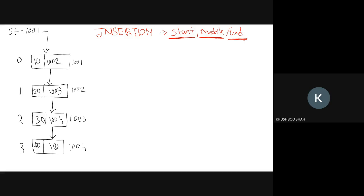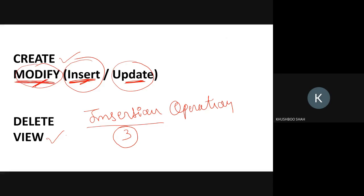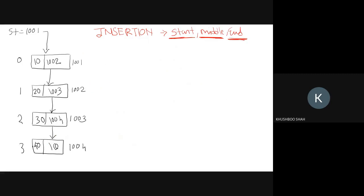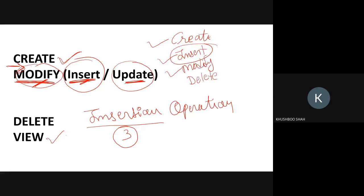When you ask the user to modify the linked list, you can give options: create, insert, and modify or update. So your menu can have create, insert, and modify. We already know create and modify; today we are covering insert.